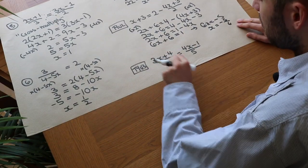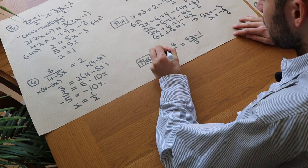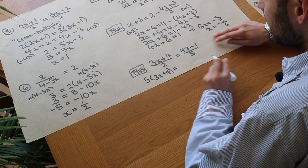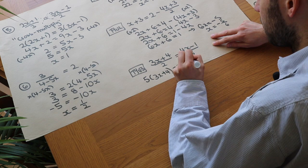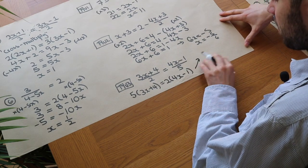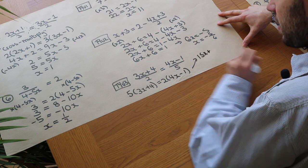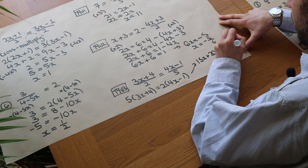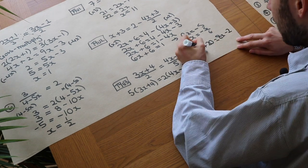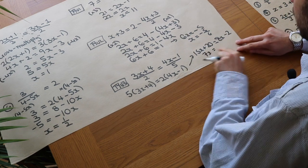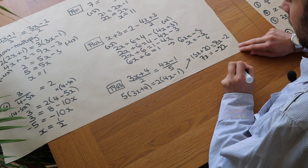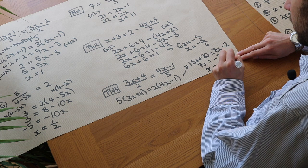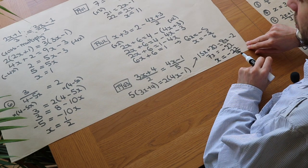Final practice question: (3x plus 4) over 2 equals (4x minus 1) over 5. We have a fraction on both sides, so we cross-multiply: 5 times (3x plus 4) equals 2 times (4x minus 1). Expanding gives 15x plus 20 equals 8x minus 2. Subtracting 8x and subtracting 20 from both sides gives 7x equals minus 22. Therefore x equals minus 22 over 7. Well done if you got those right.